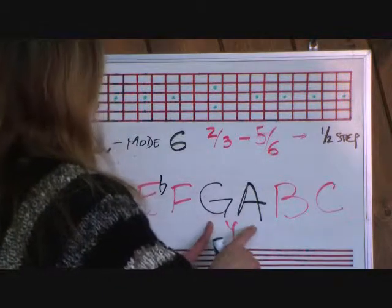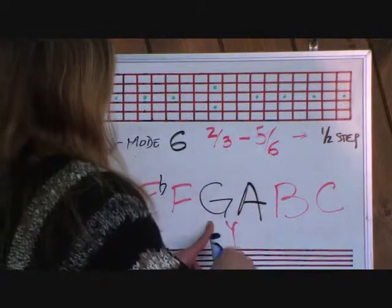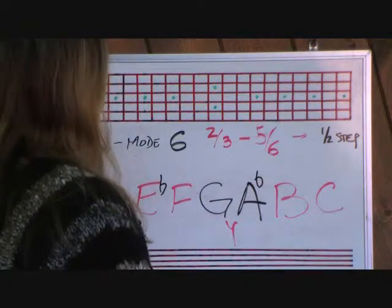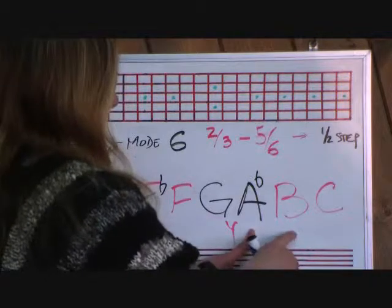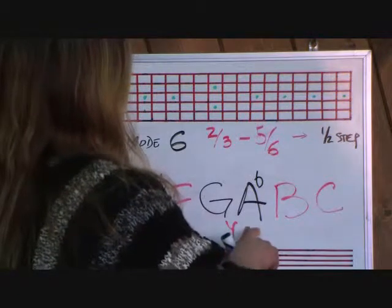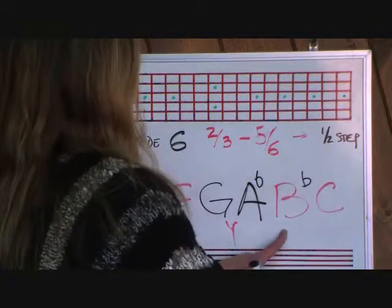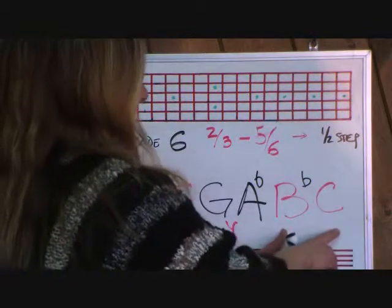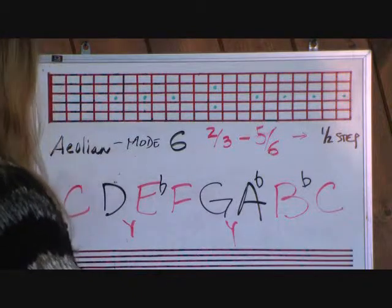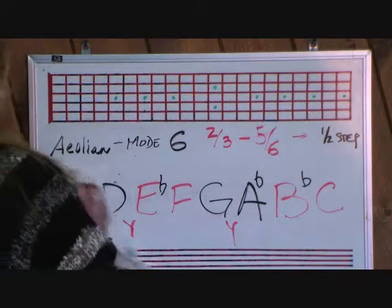The fifth and sixth step: G to A — the formula says half step between five and six. This is a whole step, so we need to put a flat there. Sixth to seventh step, A flat to B, needs to be a full step. A flat to B is a whole and a half, so we need to flat the B as well. Seventh step, B flat to C, needs to be a full step — that it is, so we leave that one alone. Moving on to the D Aeolian.